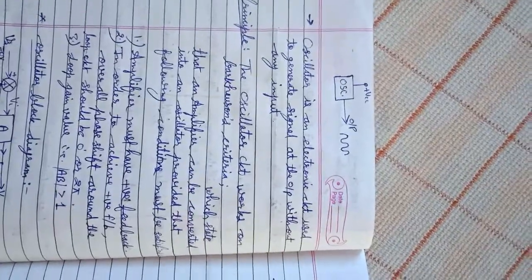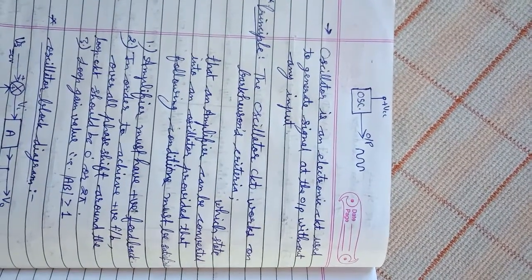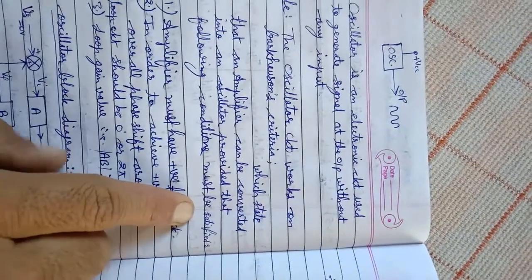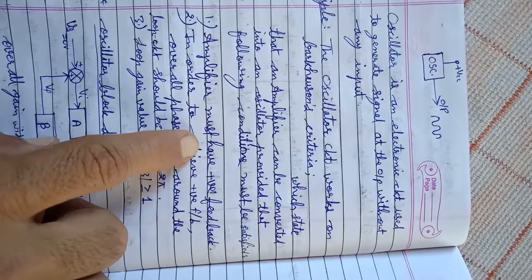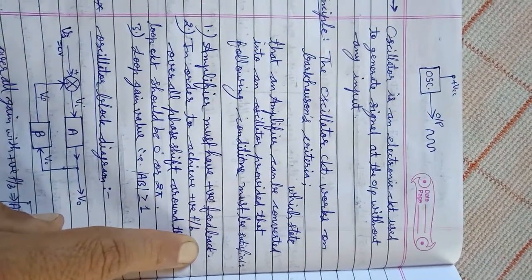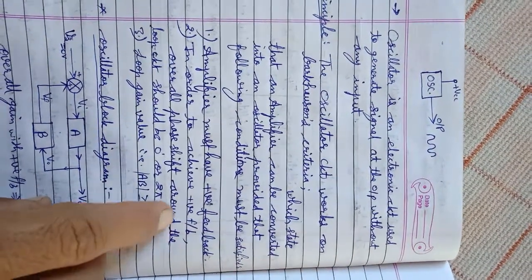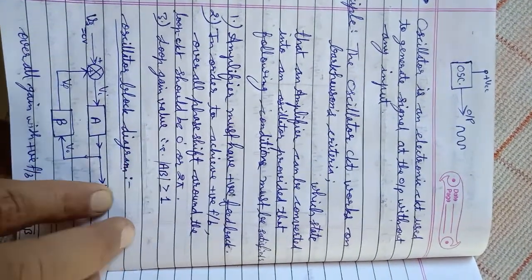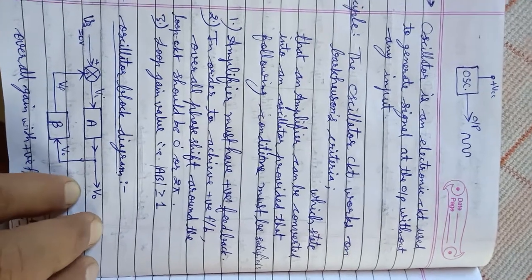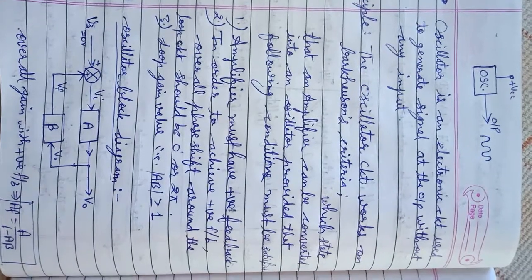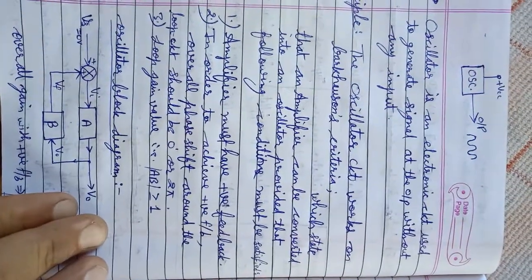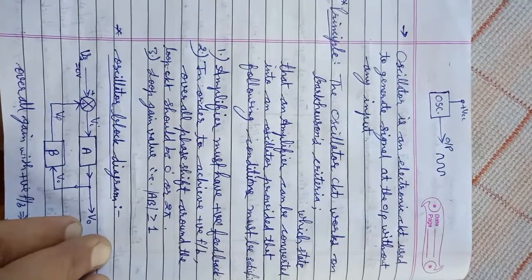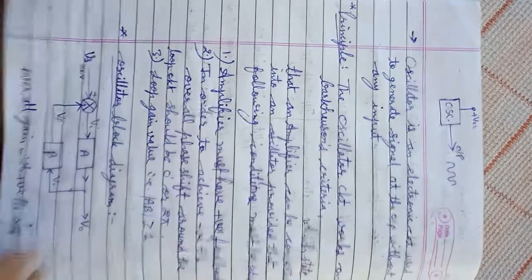Oscillator का basic principle Barkhausen criteria पर आधारित होता है। यानि किसी amplifier को oscillator की तरह काम करवा सकते हैं अगर वो following conditions को fulfill करे। तीन conditions होती हैं: पहली — amplifier must have positive feedback; दूसरी — total phase shift zero degree या 360 degree होना चाहिए, यानि input और output के बीच और पूरे loop में जो phase shift है वो zero या 360 degree हो; और तीसरी — loop gain must be greater than or equal to one। अगर ये तीनों conditions fulfill होती हैं यानि Barkhausen criteria fulfill होता है, तो कोई भी amplifier oscillator की तरह behave करेगा।